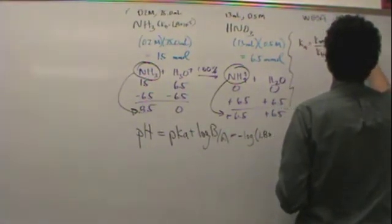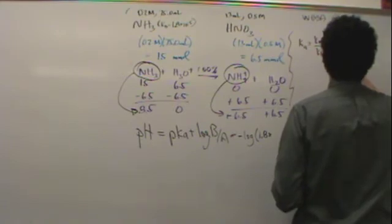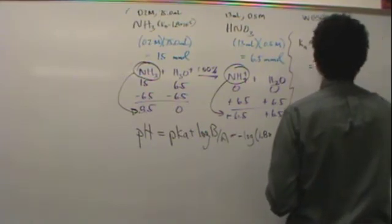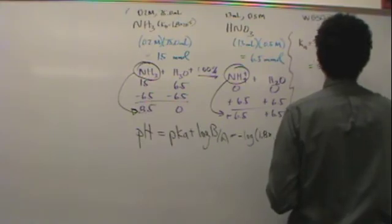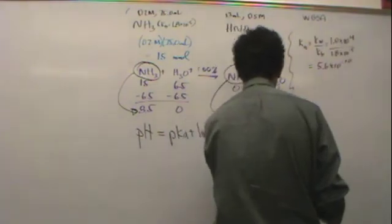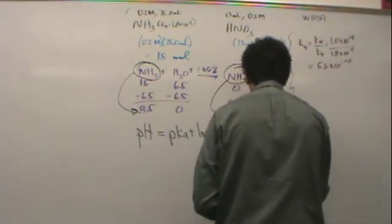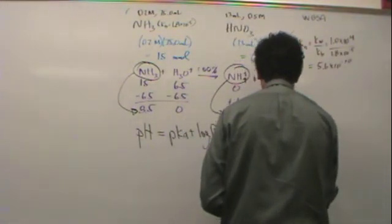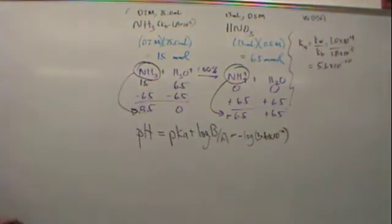Kw is going to be given on the exam. Kb, 1.8 times 10 to the minus 5. You need to calculate this. I think it's 5.6 times 10 to the minus 10. Okay. So, now I'll put that in here. 5.6 times 10 to the minus 10. Negative log of Ka, that'll get you there.